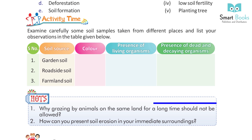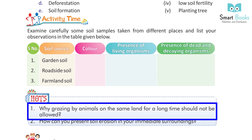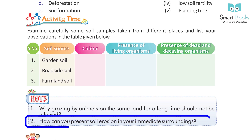Higher Order Thinking Skills (HOTS): 1. Why should grazing by animals on the same land for a long time not be allowed? 2. How can you prevent soil erosion in your immediate surroundings?